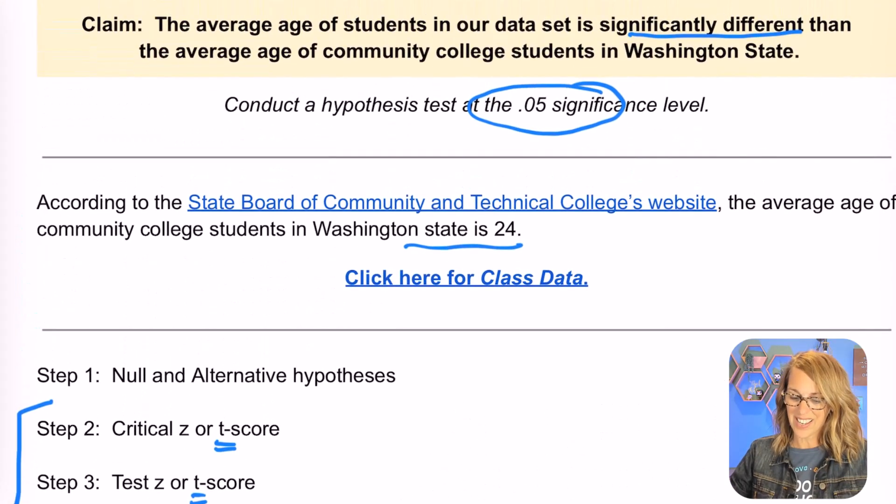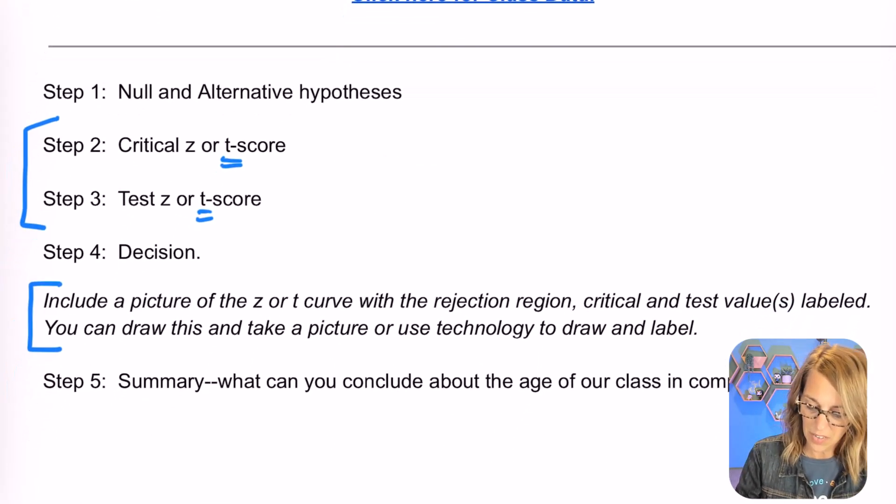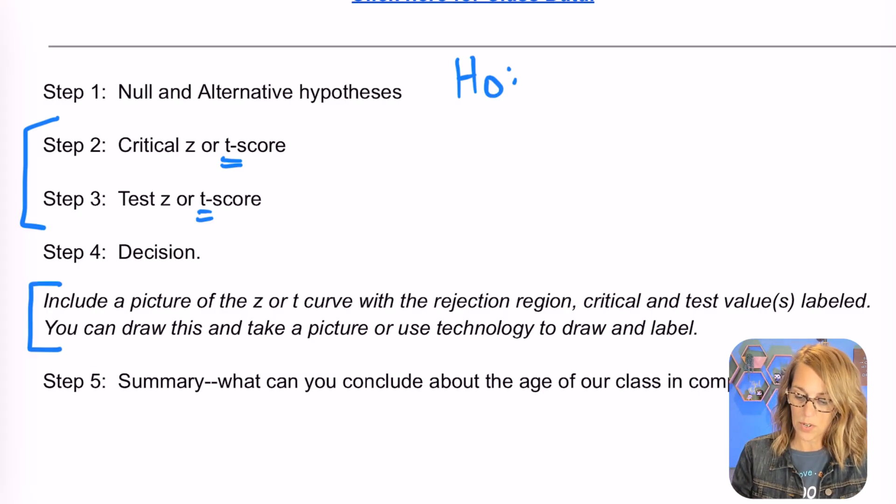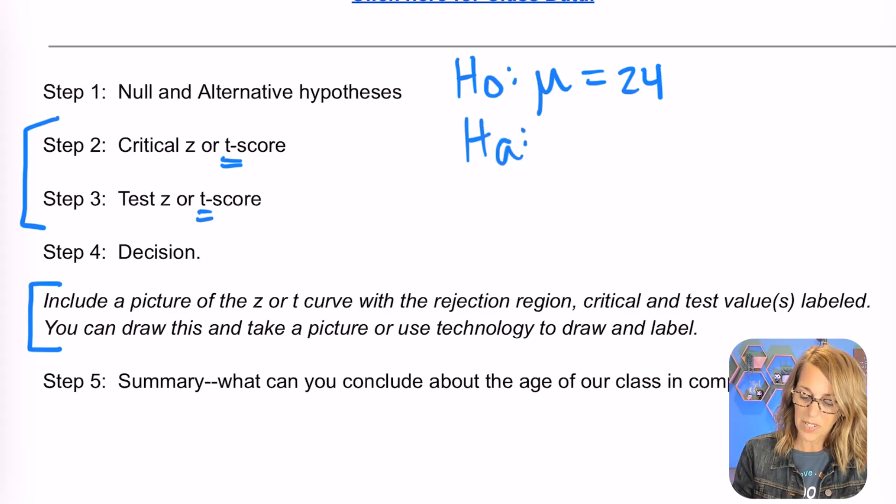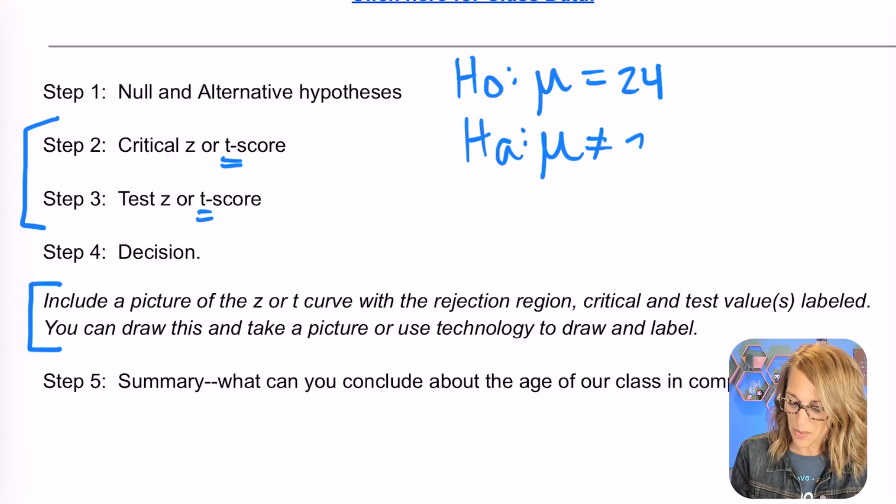The claim says that the average age in our data set is significantly different. As I put our hypotheses together, we've got our null hypothesis H sub zero. We're hypothesizing about the actual mean which we call mu, and we're going to assume that the state average is correct at 24. Our alternative hypothesis is really our claim but still about the actual mean. We think that it might be different, significantly different. That means we're going to use a not equals here, not equals 24.